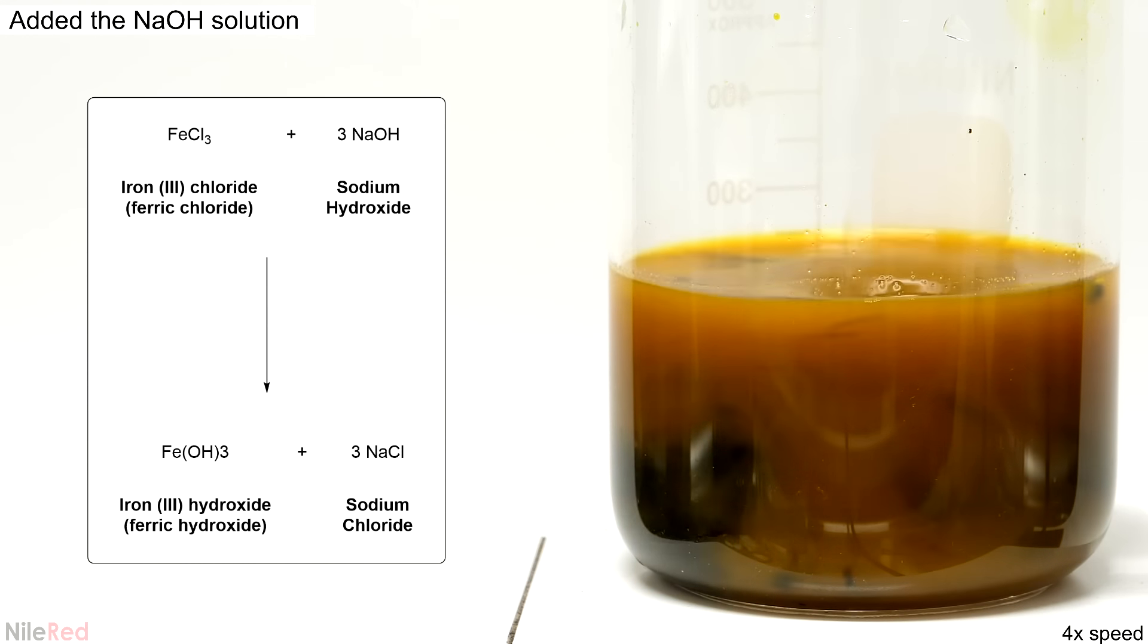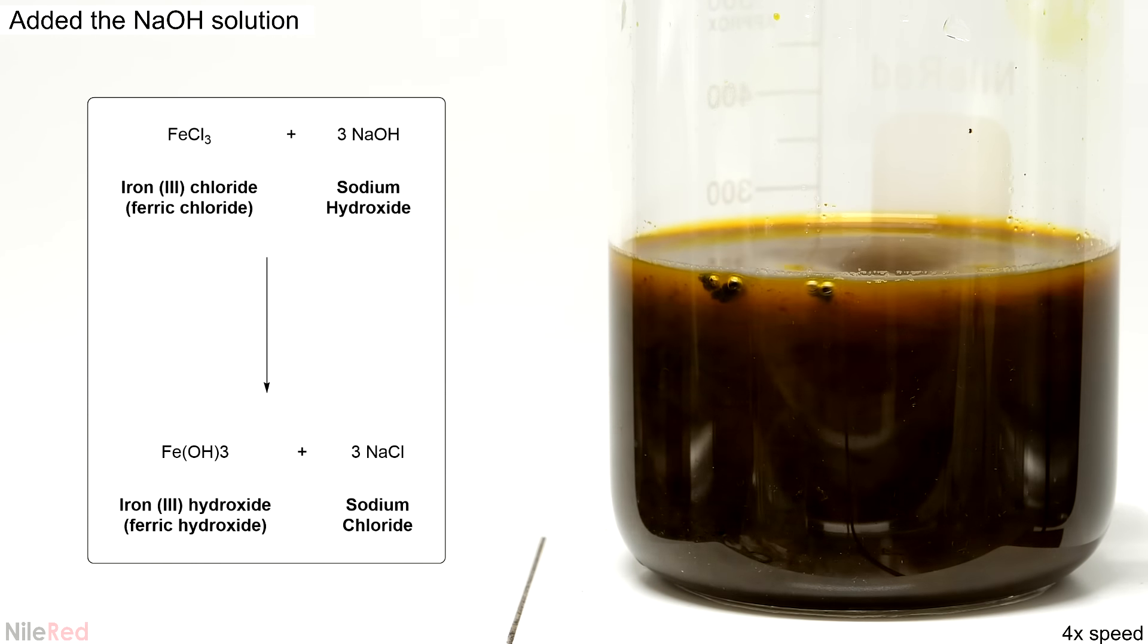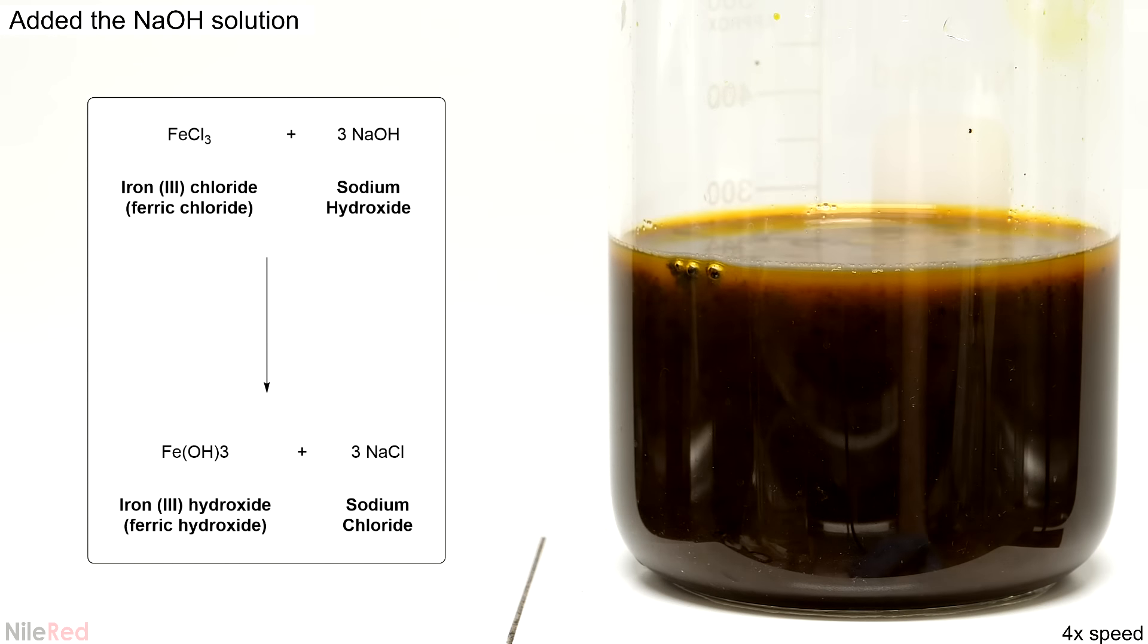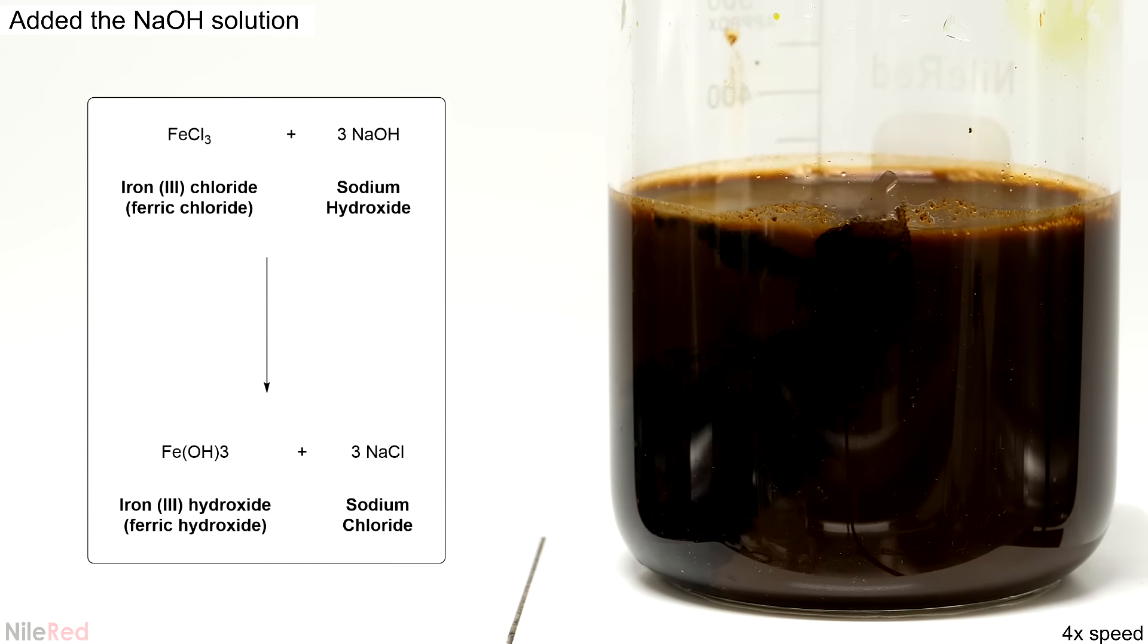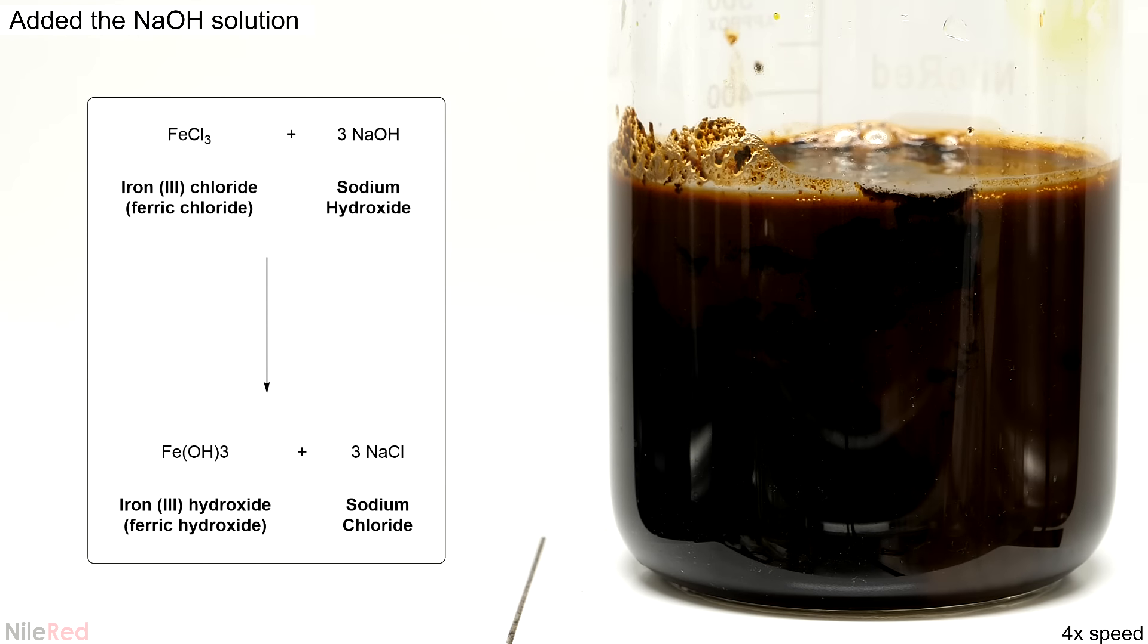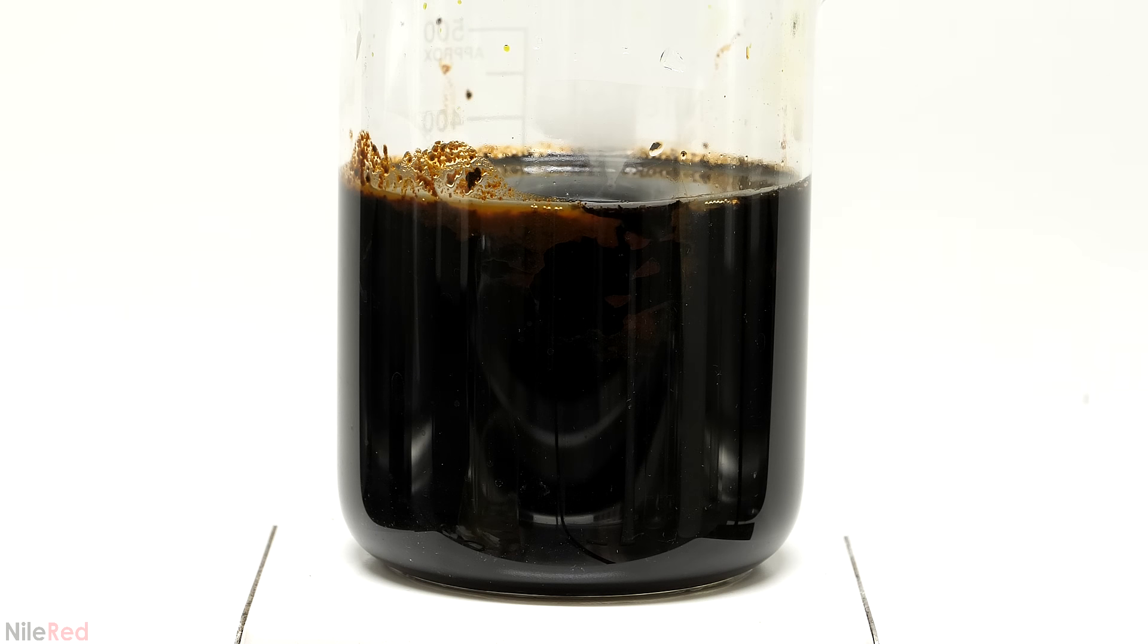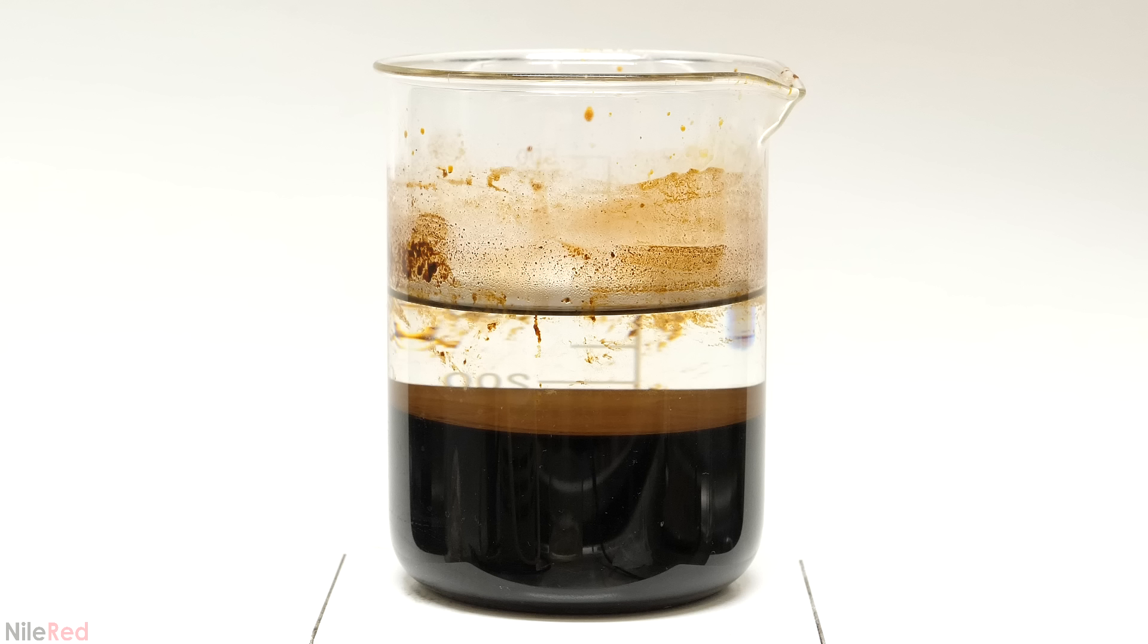So I just moved on to the next step, which was to react it with the sodium hydroxide solution that I made a couple minutes ago. I added it slowly over the course of about a minute and a lot of dark iron three hydroxide formed. This form of iron was practically insoluble in water, so it immediately precipitated out. As a side product this reaction also made sodium chloride, but that just stayed dissolved in solution. I continued stirring it for about an hour and then I let it sit overnight.